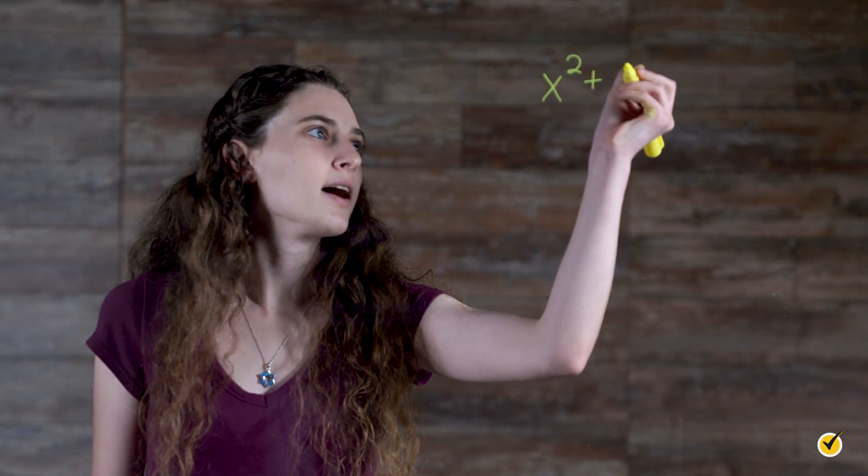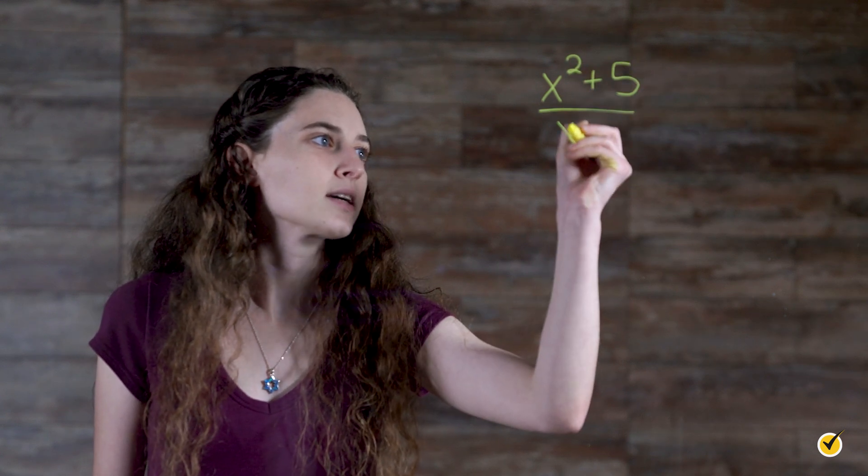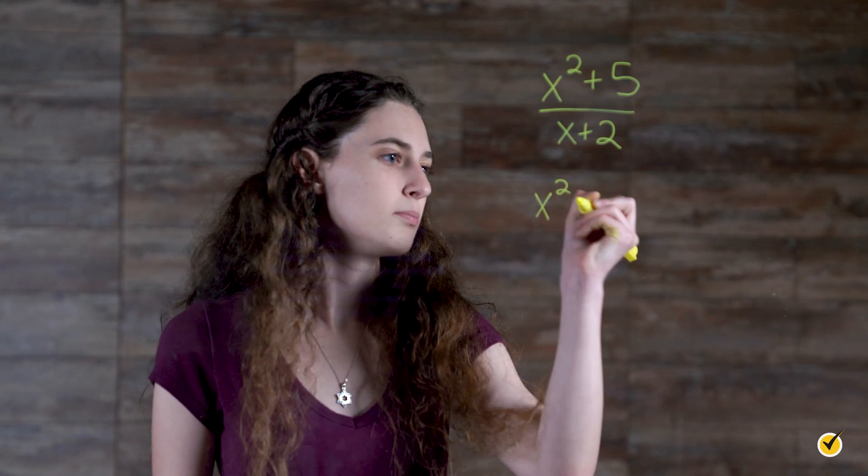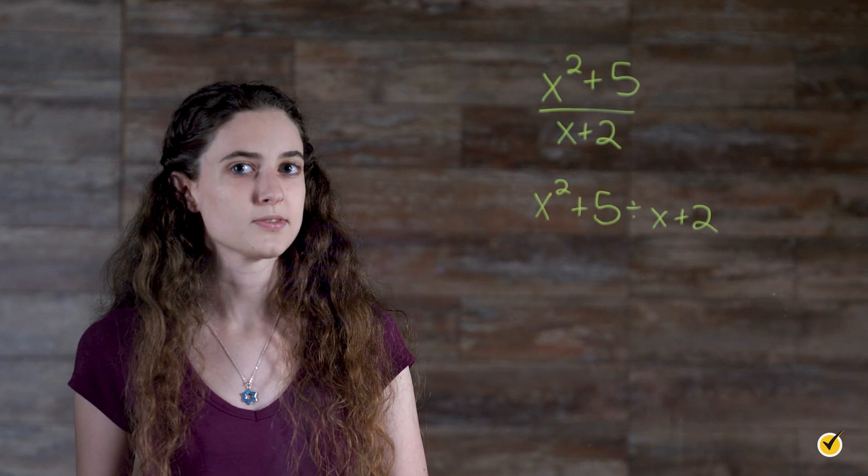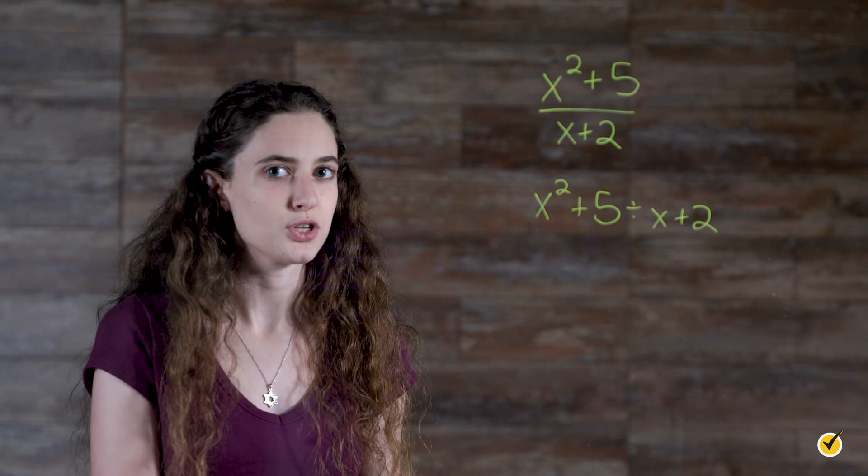For example, suppose you are graphing this rational expression, x squared plus 5 divided by x plus 2. If you do not use parentheses to define the numerator and denominator in your calculator, it would read this expression as x squared plus 5 divided by x plus 2, as opposed to the intended rational function x squared plus 5 divided by x plus 2.